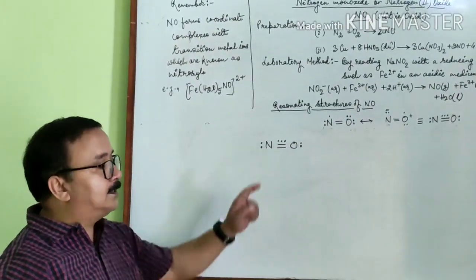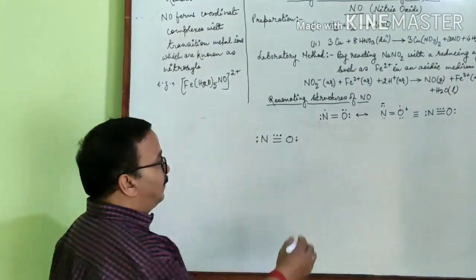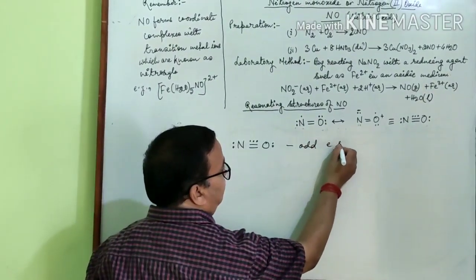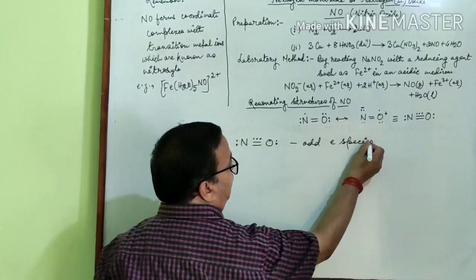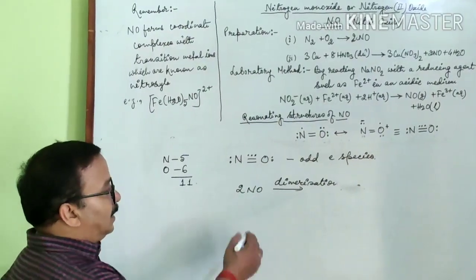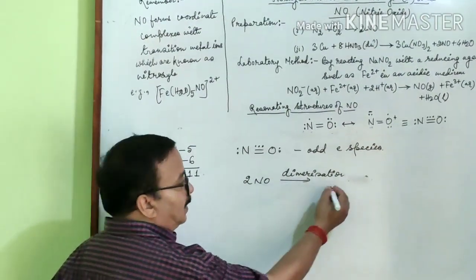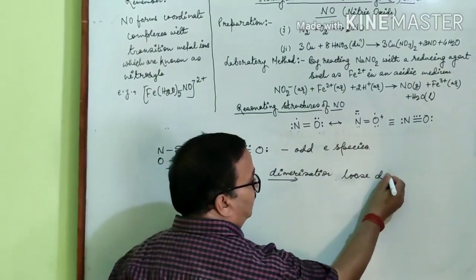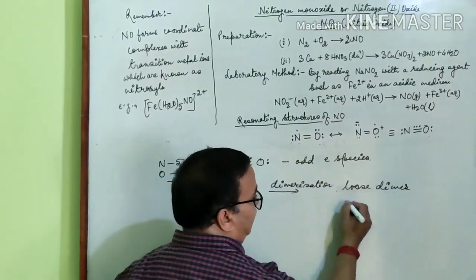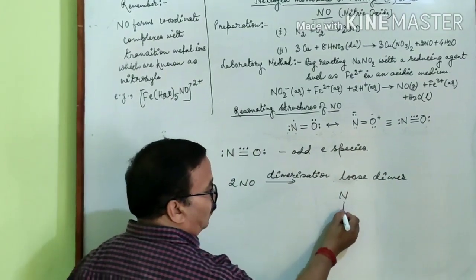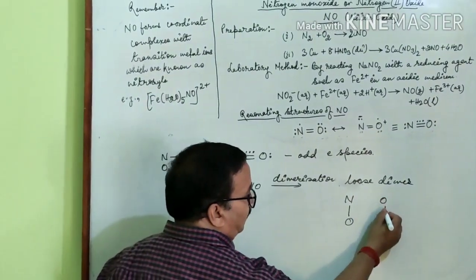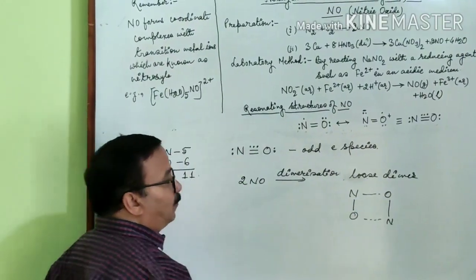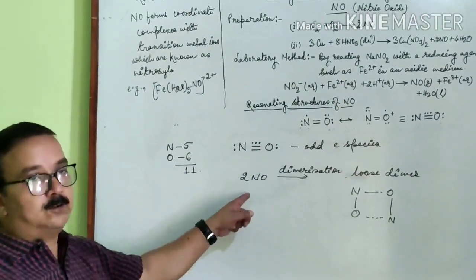Since there is a 3-electron bond, therefore it is an odd electron species. Nitric oxide undergoes dimerization and forms a loose dimer. This is the dimeric form of nitric oxide.